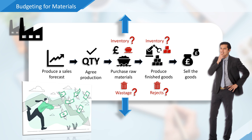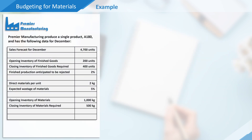Let's look at an example. Premier Manufacturing produce a single product, the A180, and has the following data relating to December. Using this information we're going to work through the steps required to calculate the total quantity of material that needs to be purchased in December.